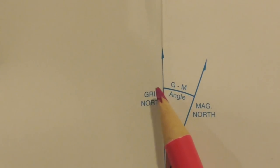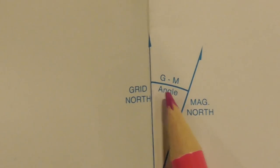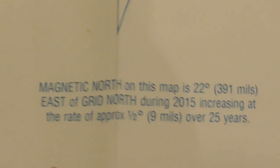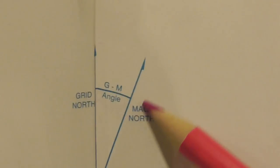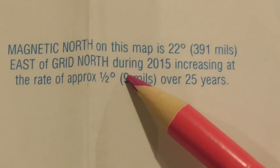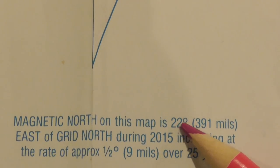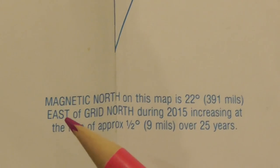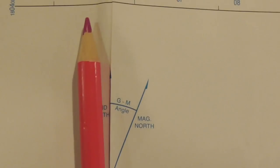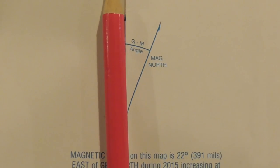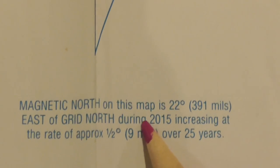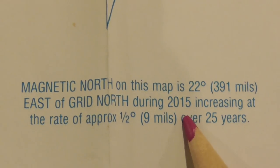In between those two arrows we have what we call the grid magnetic angle. The information below the magnetic declination diagram reads: magnetic north on this map is 22 degrees, or 391 mils, east of grid north, during 2015 — when the map was made — and increasing. So the magnetic arrow will continue to tick over to the right, increasing at the rate of approximately half a degree, or nine mils, over 25 years.